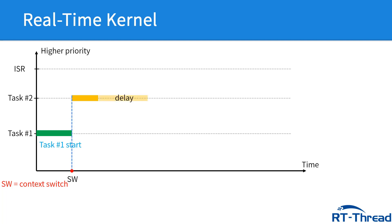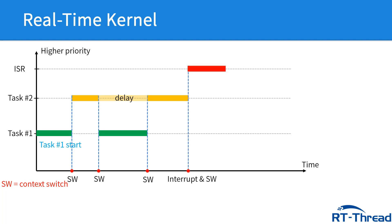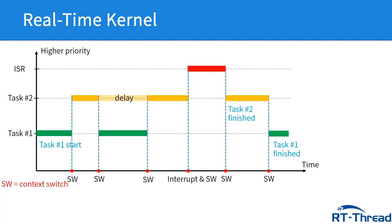At this moment, task 2 wants to delay for a while, and the real-time kernel scheduler switches the CPU from task 2 to task 1, instead of waiting for nothing. At this point, an interrupt comes in. In the real-time kernel, interrupts have the highest priority, so task 2 must wait until the interrupt has finished. Then task 2 and task 1 finish their jobs respectively.